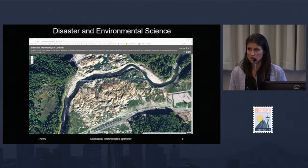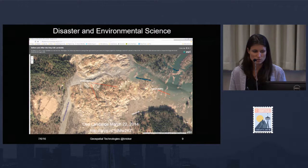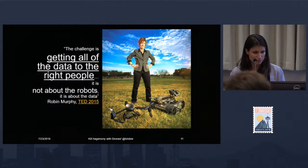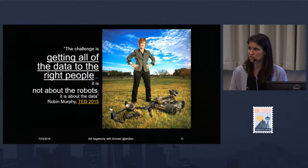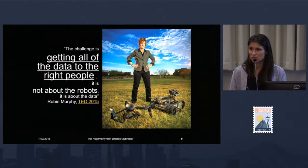A local example of how imagery was helpful for both environmental scientists and disaster response was the Oso landslide. This is the before imagery and then the after imagery — back in March of 2014, a really big event where drones were used heavily. Robin Murphy, who does a lot of work with drones for disaster response, has a fantastic TED talk and was highly active in the Oso landslide. She concludes with: it's not about the robots, we have the robots. It's about the data and delivering the data to the right people in a timely fashion.